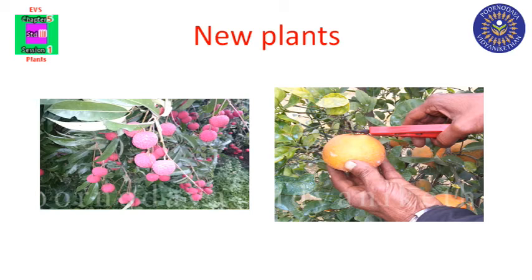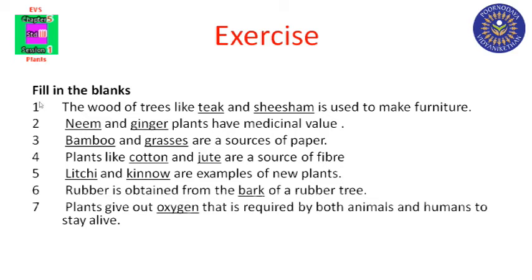I hope you understand this chapter. We can move to the exercise. Fill in the blanks. First, the wood of trees like teak and shisham is used to make furniture. Second, neem and ginger plants have medicinal value. Third, bamboo and grasses are a source of paper.